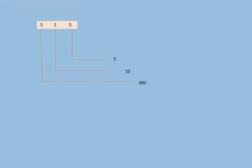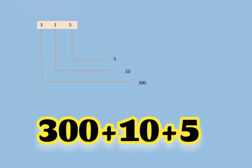Now we have 315. We can write 3 as 300 and 1 as 10, and we can't add or change the 5 because it is on the 1's place. The 1's place doesn't have any zero. So I hope that you understand very well.